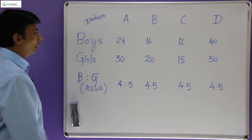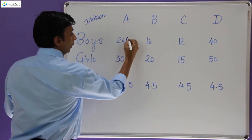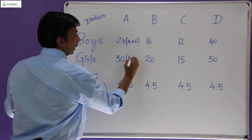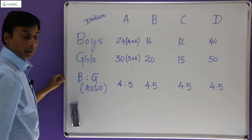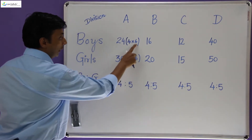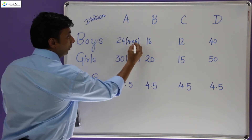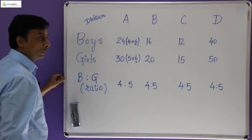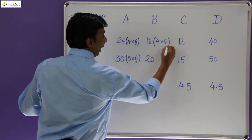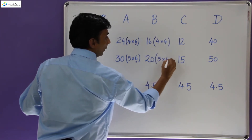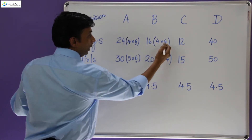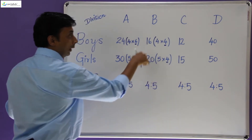Now if you observe something over here: 24 can be written as 4 × 6, whereas 30 can be written as 5 × 6. The ratio of boys to girls is 4 is to 5, and you notice both numbers are getting multiplied by a common value, which is 6 in this case. Similarly, 16 is 4 × 4 and 20 is 5 × 4. Again, the ratio is 4 is to 5, and these two numbers 4 and 5 are each multiplied by a common number to give the number of boys and girls.